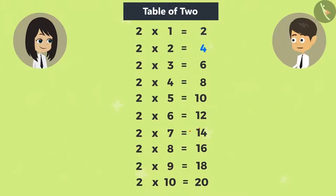2 ones are 2. 2 twos are 4. 2 threes are 6. 2 fours are 8. 2 fives are 10. 2 sixes are 12. 2 sevens are 14. 2 eights are 16. 2 nines are 18. 2 tens are 20.